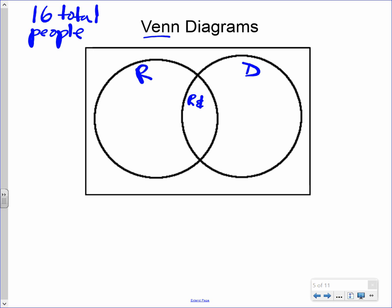Right here put Raider fan and D - put R and D. So Raider fan, Dodger fan, and in the middle R and D. Now outside here, outside the two circles, are neither R or D - neither Raider fan or Dodger fan. All right, let's do this.